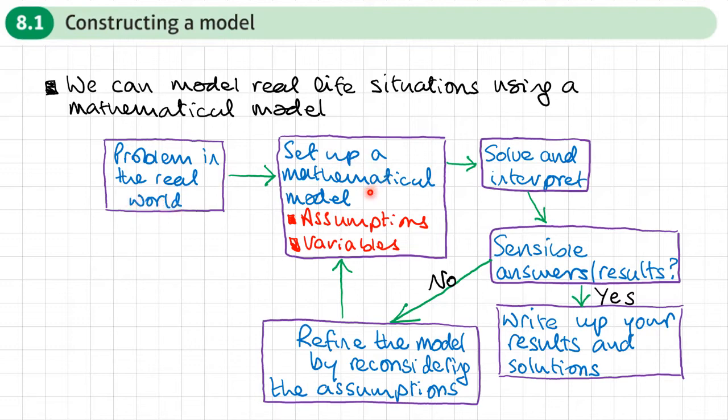Then we would set up our mathematical model, but we might need to make some assumptions. For example, we may assume that the ball isn't spinning, we may ignore wind resistance, we may make some assumptions about the type of tennis racket and the type of surface, the type of materials the tennis ball is made of.